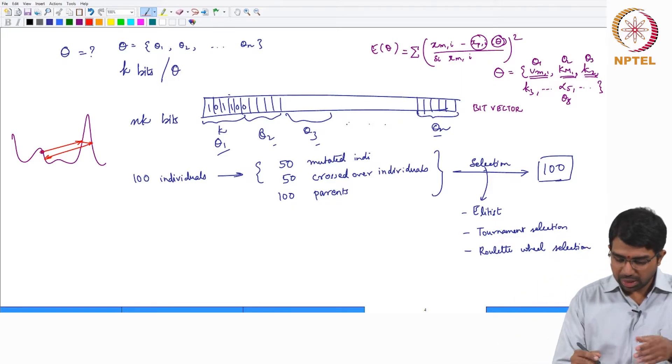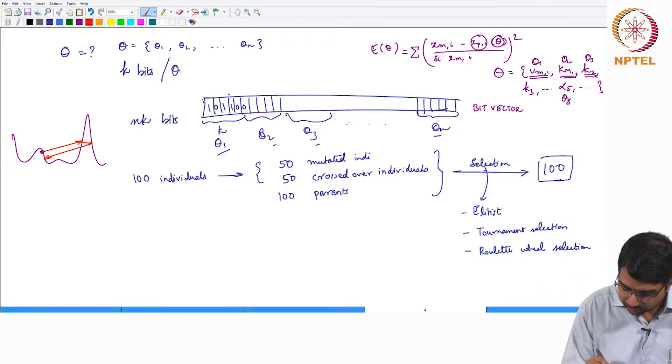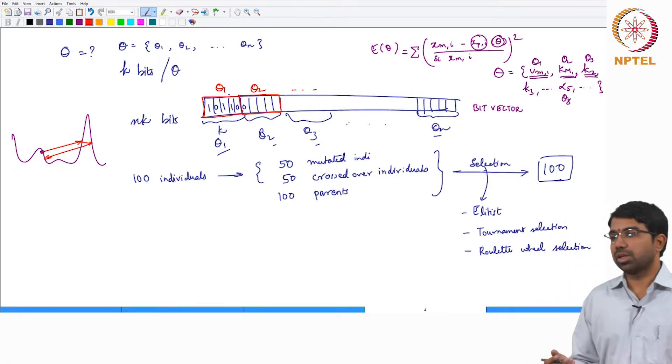You basically embed all your parameters - theta1, theta2, and so on. There are other ways to represent. So in any genetic algorithm, if you just take a step back to see how genetic algorithms work, the biggest challenge is that of representation.